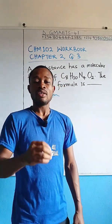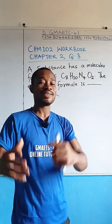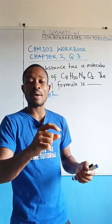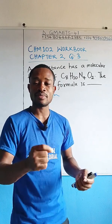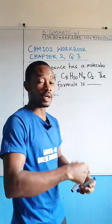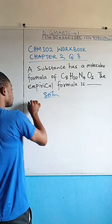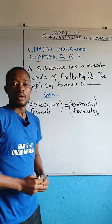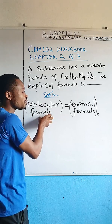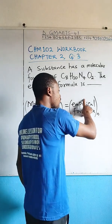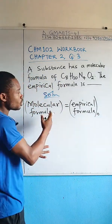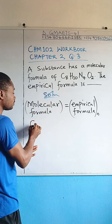The molecular formula of a compound is obtained by multiplying the empirical formula by a certain common atomicity. I'm going to show you on the board. This is the relationship: to get a molecular formula of any compound, it is the empirical formula times a certain atomicity n.